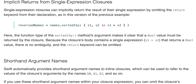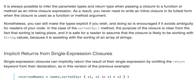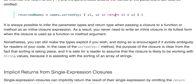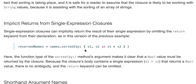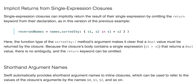Implicit returns from single expression closures: The last line is return, so we don't even need to write the keyword return here. We can simply say { s1, s2 in s1 > s2 }. That will return the boolean value we're looking for, and the sorted function can act on it.